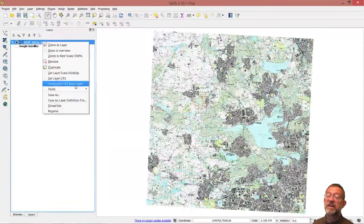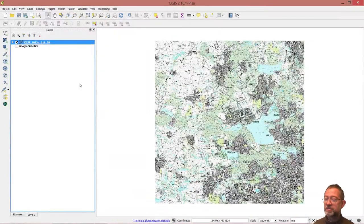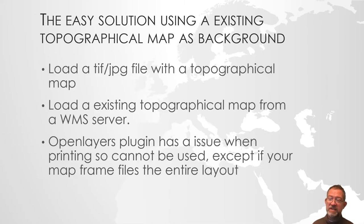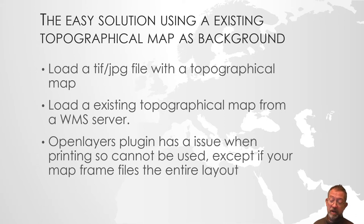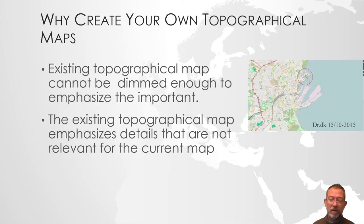Another issue with Google is that it only uses a specific coordinate system, so it changed the coordinate system in my QGIS. To summarize: you can easily get information into QGIS as background information as TIFFs, JPEGs or topographical maps from a file server. Or you can use WMS to get aerial photos or topographical maps from specific periods. You can use the Open Layers plugin, but remember not to use it in the print layout or print composer because there are some annoying issues there.